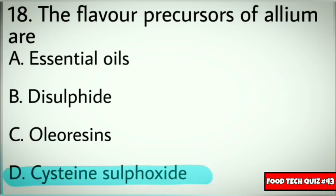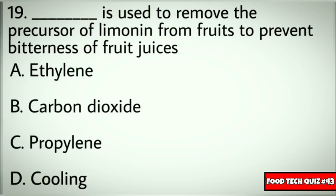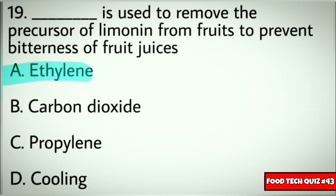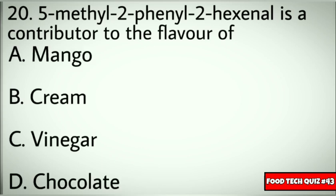Question number 19: Dash is used to remove the precursor of limonin from fruits to prevent bitterness of fruit juices. Options: A) Ethylene, B) Carbon dioxide, C) Propylene, D) Cooling. Correct answer: A) Ethylene. Question number 20: 5-methyl-2-phenyl-2-hexanol is a contributor to the flavor of? Options: A) Mango, B) Cream, C) Vinegar, D) Chocolate. Correct answer: D) Chocolate.